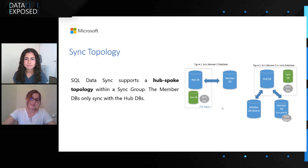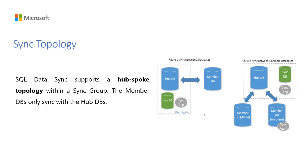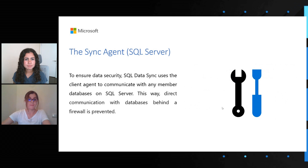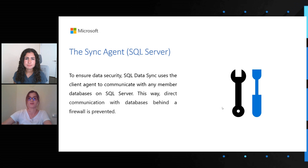SQL Data Sync supports hub and spoke topology. As you can see in this diagram, the changes between members are only done to the hub database, which has to be in Azure SQL DB. The members get synchronized for changes that go through the hub DB. In Figure 2, you have a member DB that's in Azure and another one that's on-prem. For on-prem data synchronization, you need a Sync Agent as well. This Sync Agent is for SQL Server members and is a data security measure because it uses encrypted connections and a unique token and agent key, so direct communication with the databases behind the firewall is prevented.